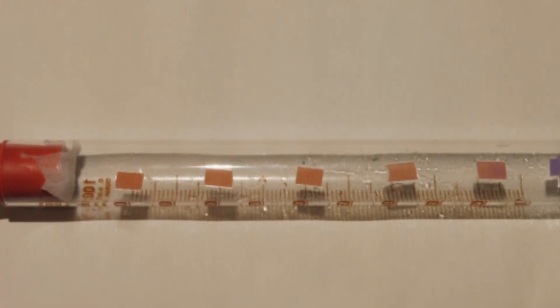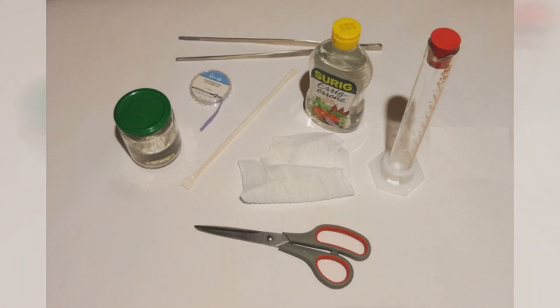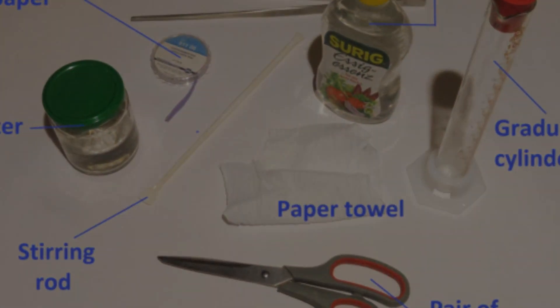Let's now prove our prediction experimentally. For this experiment, we will need the following materials: blue litmus paper, vinegar which is going to be our acid, graduated cylinder, paper towel, stirring rod, water, a pair of scissors, a timer which is not in the picture, and tweezers which might be useful.